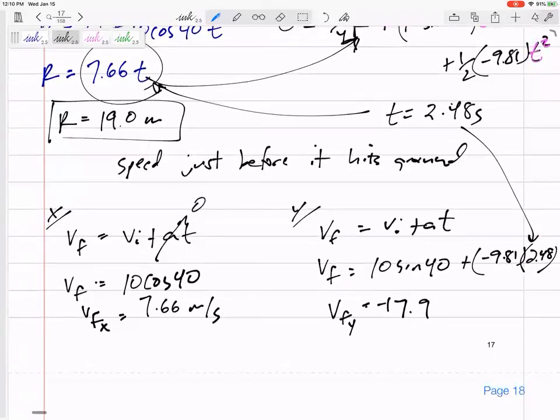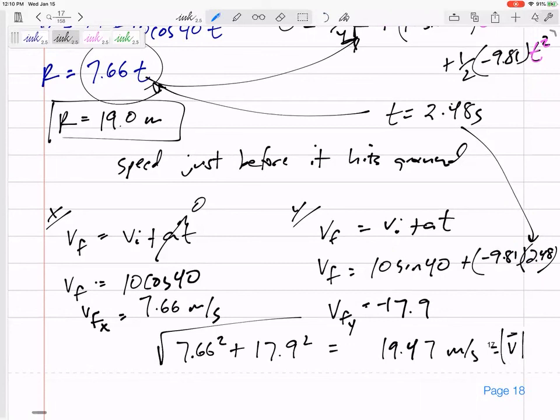And then, A squared plus B squared. 7.66 squared. 17.9 squared. Take the square root to find the speed. 19.47 meters per second would be speed. Speed is the magnitude of the velocity. Sometimes I'll put V with absolute value just to show the magnitude.